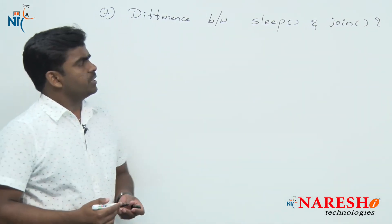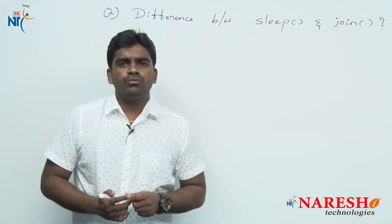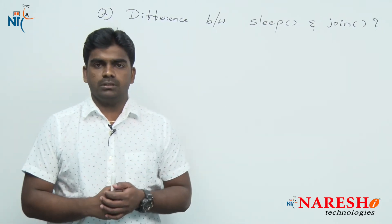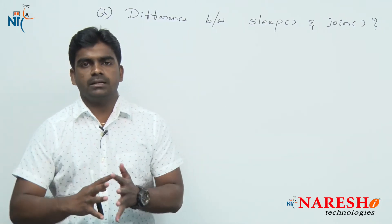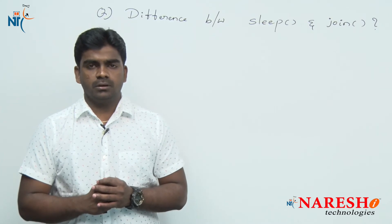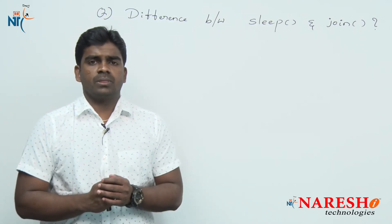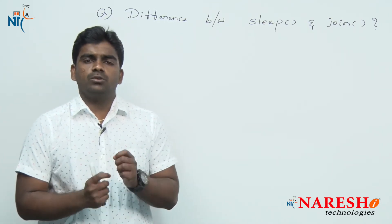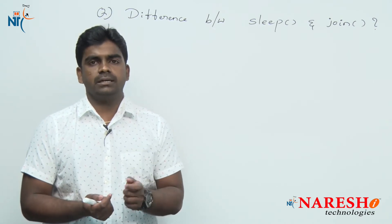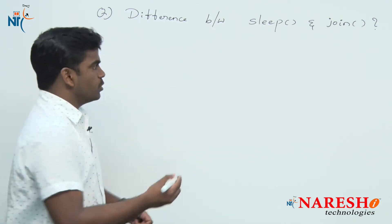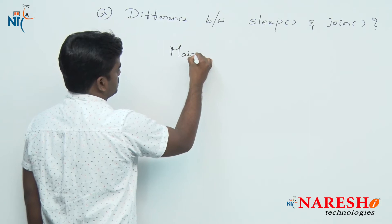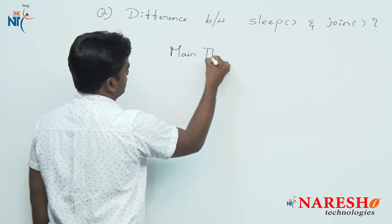The question is: when we go for the sleep method and when we go for the join method. To understand clearly, for example, in a thread — even when we are not creating any threads, JVM internally creates a thread called the main thread, which we know as the main thread.